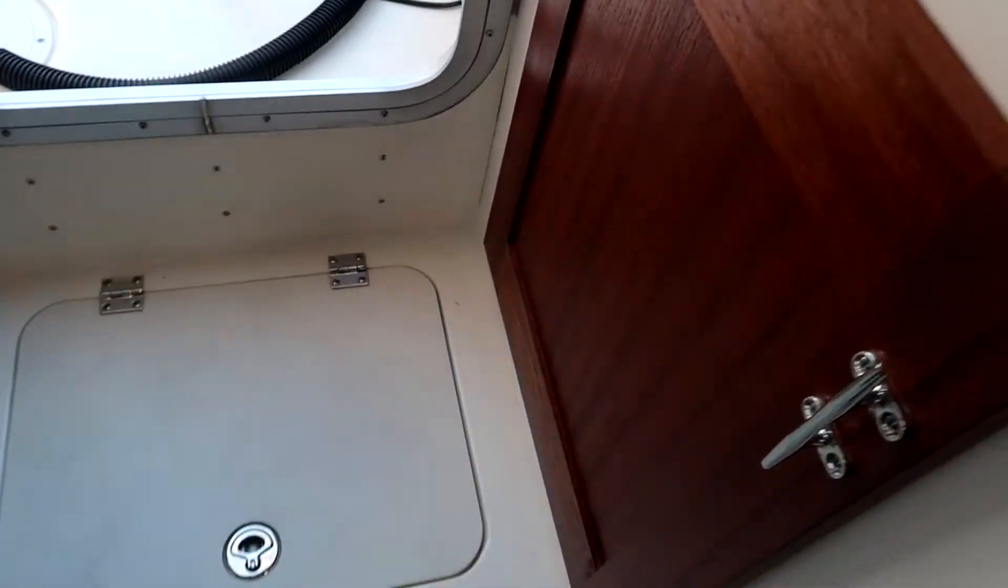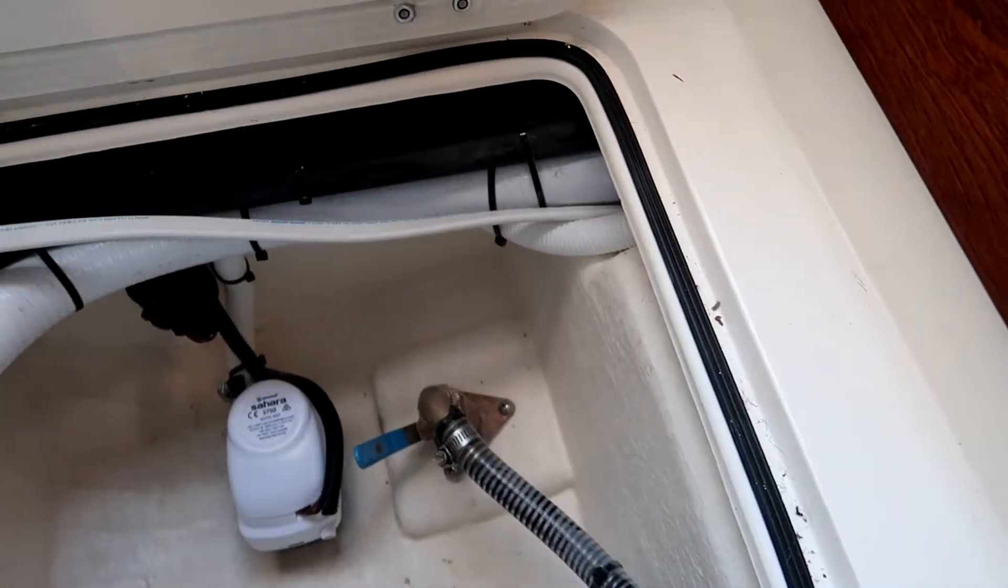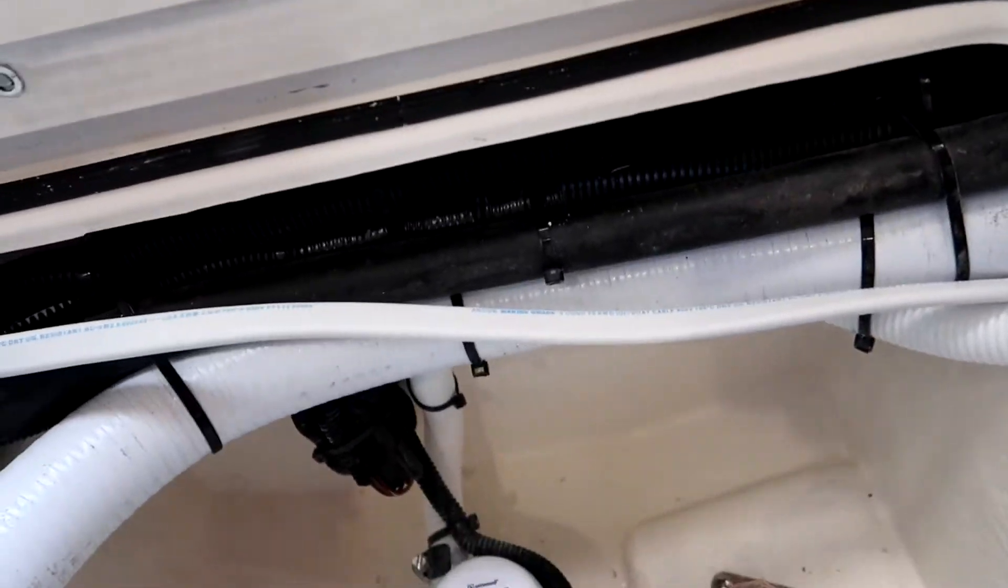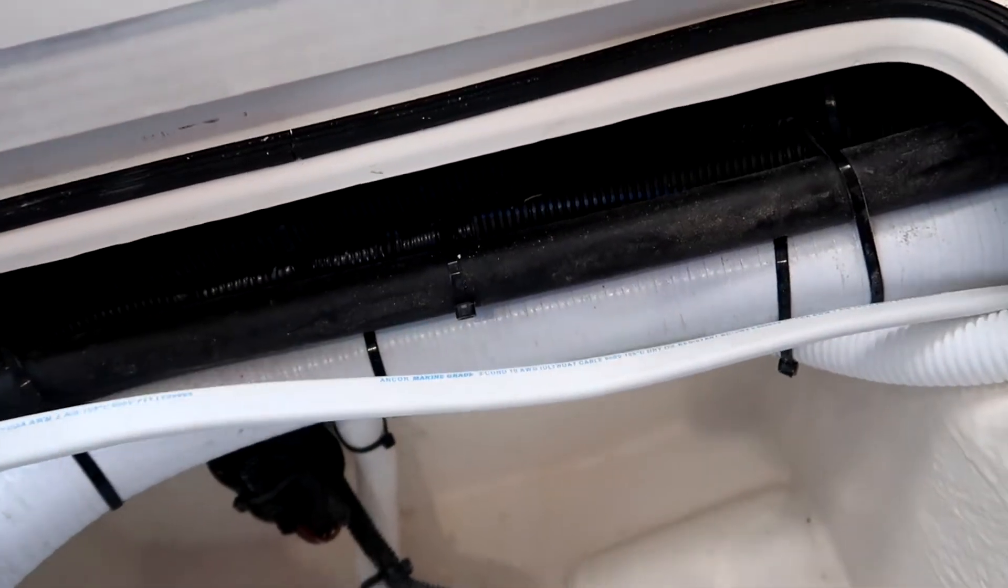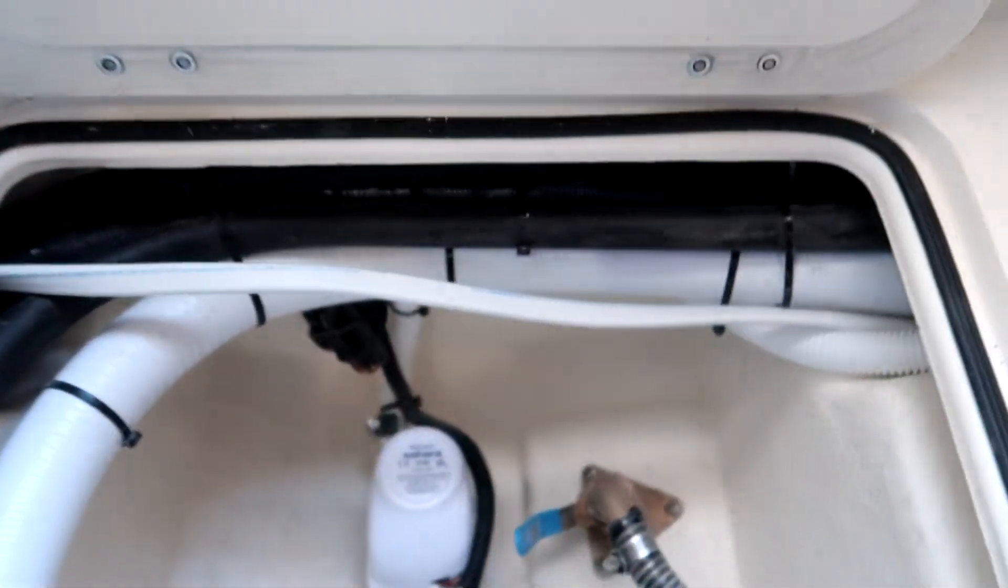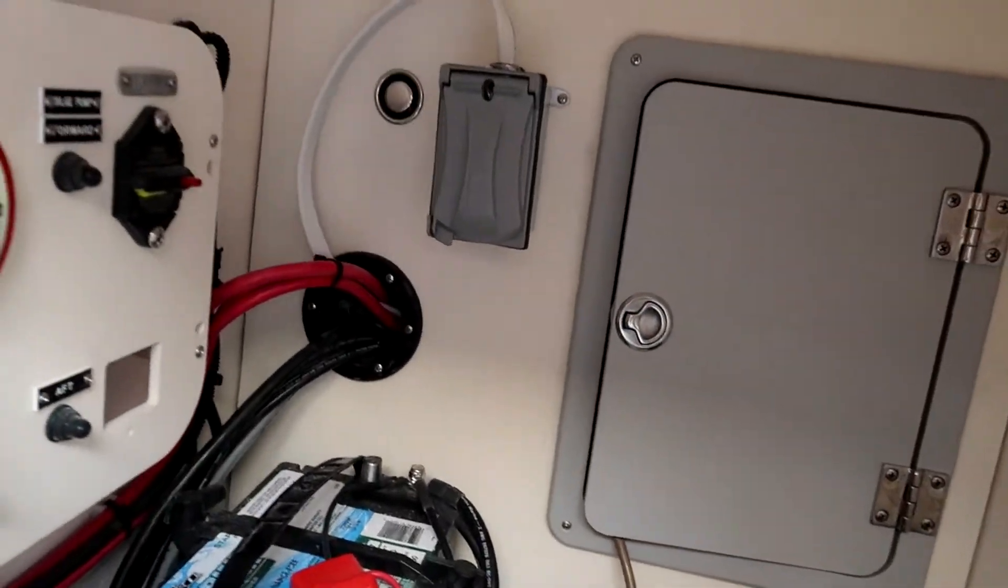Now what I did is I ran this 10 gauge Ancor wire. I haven't sealed it, I haven't got it all strapped up yet, but here's the wire right here, this 10 gauge wire. So I ran it from around there, ran it under, and I came out over here.